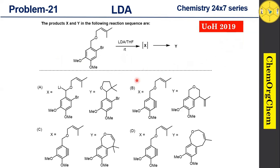According to this question, this substrate reacts with LDA at room temperature to produce intermediate X. This intermediate X then converts into product Y under the given reaction conditions. There are four options — let's find out the correct one together.